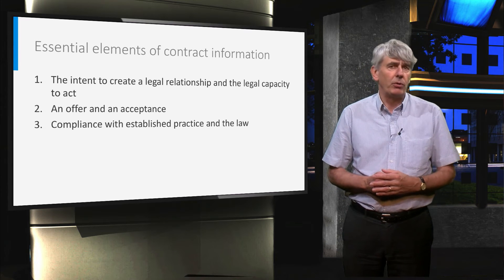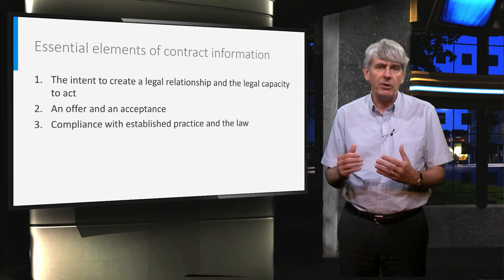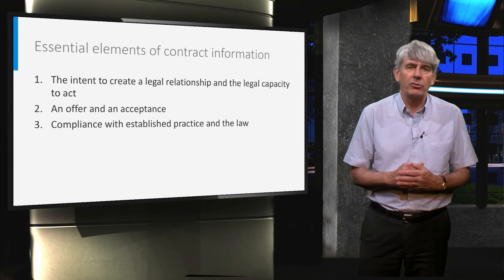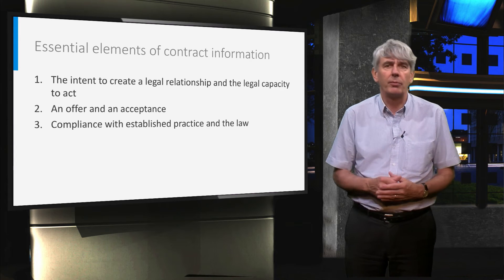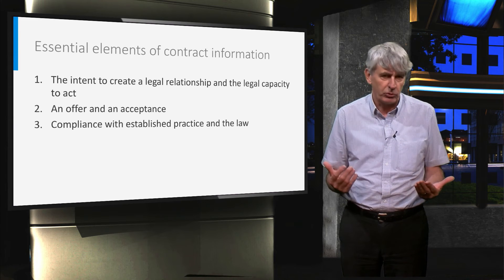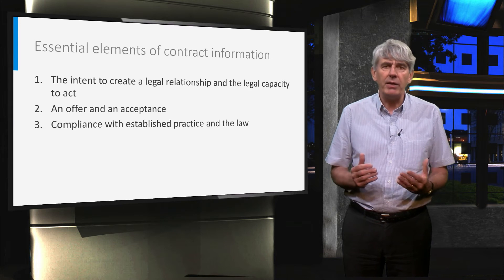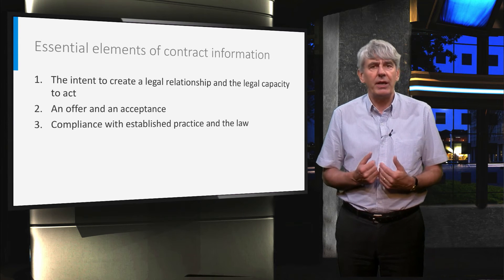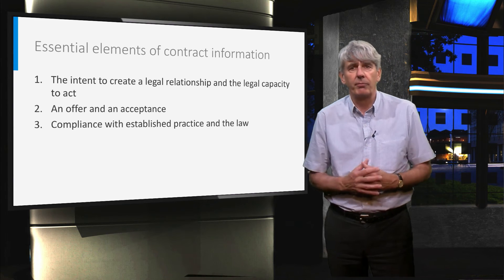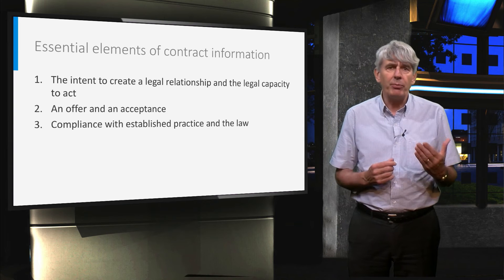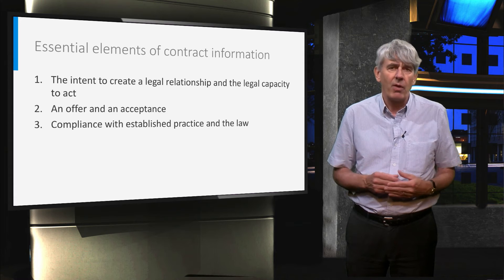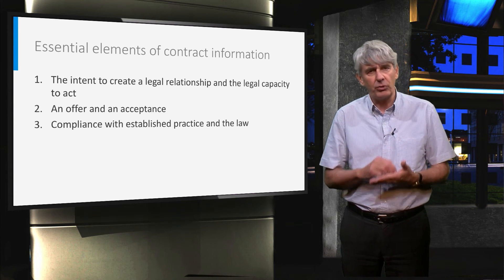In principle, parties have freedom of contract. This means they can stipulate anything they like in their contract, provided it does not contravene the law and it is feasible. A contract to build a perpetual motion machine, for instance, would not be possible. Contracts are only binding on the contracting parties and generally not subject to any format — this means they can be oral as well as written. The main problem with oral contracts is that it can be hard to prove what exactly has been agreed, which is the main reason why contracts are usually written.